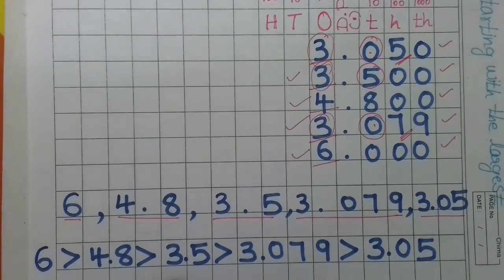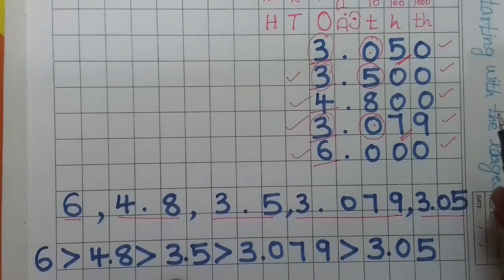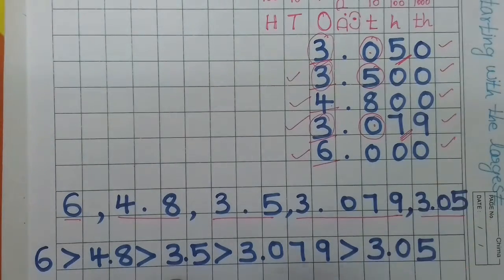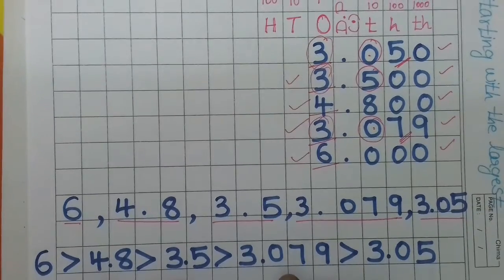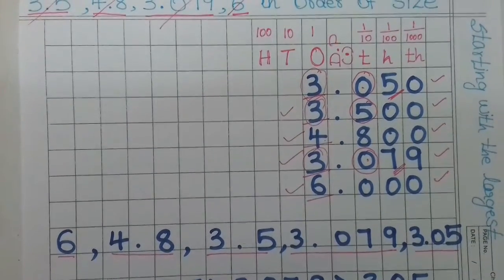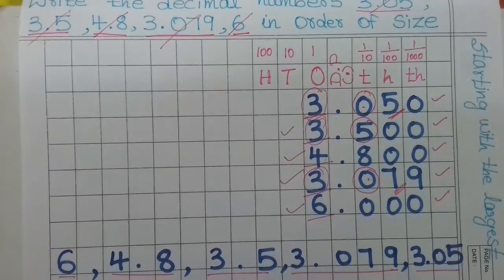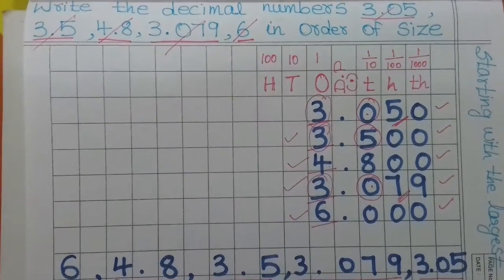To summarize the steps: for any decimal or whole numbers, fill in a place value table, convert all to like decimals with equal decimal places, then compare — first the whole number part, then each decimal digit place by place.